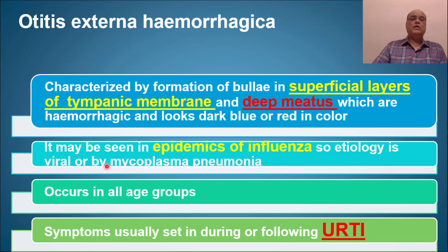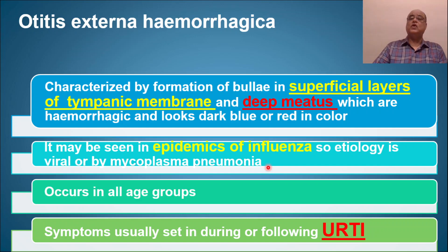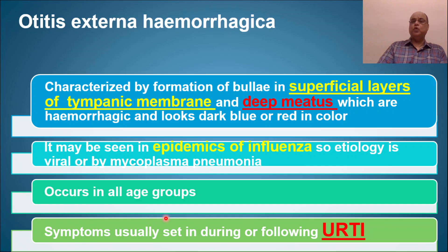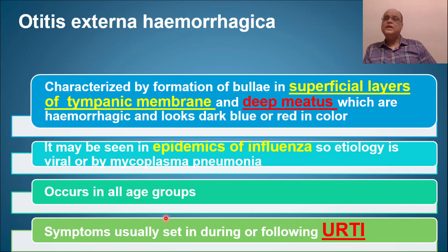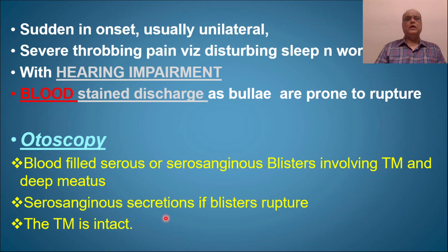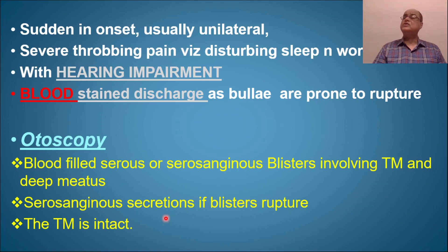It may be seen in epidemics of influenza, which is why it is considered viral in origin. Mycoplasma pneumoniae has also been suggested as a cause, but evidence is limited. It occurs in all age groups and the symptomatology typically occurs during or just after an upper respiratory tract infection. Onset is sudden and unilateral.